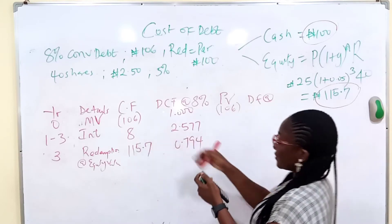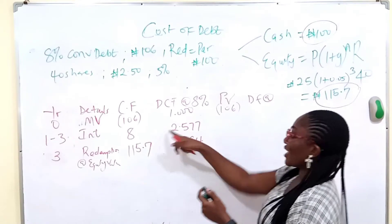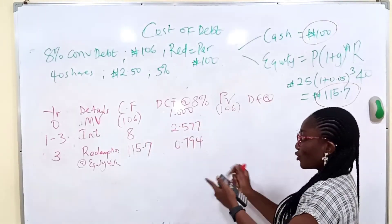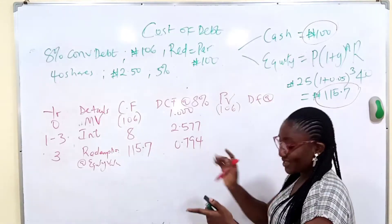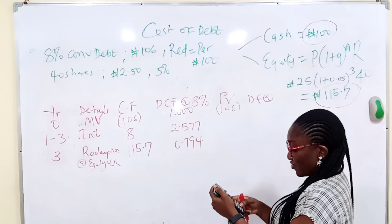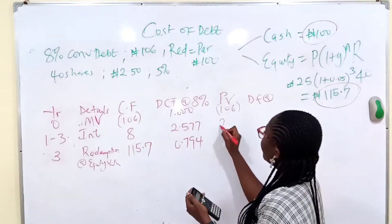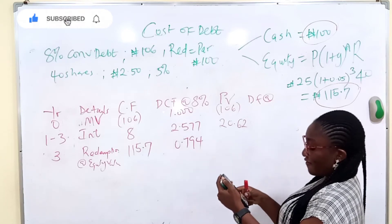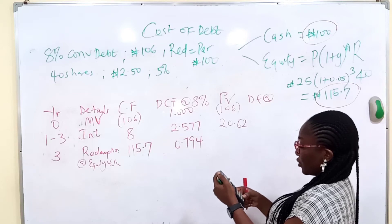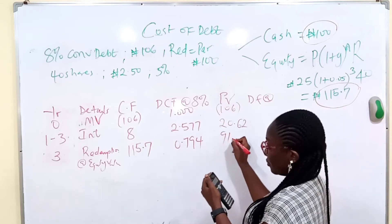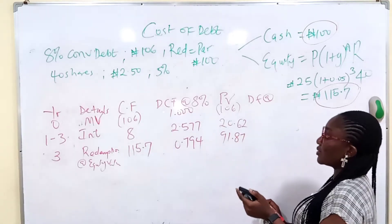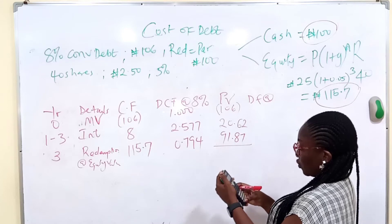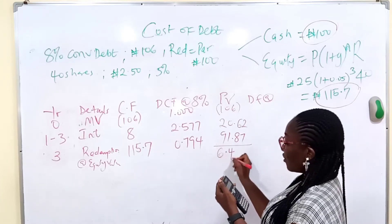Get your present value. 106 times, this is your cash outflow 106. 8 times 2.577 times 8, we have 20.62. Then 115.7 times 0.794, we have 91.87. Does that make sense? Now let's get the NPV. 91.87 plus 20.62 minus 106. We have a positive NPV, 6.49.